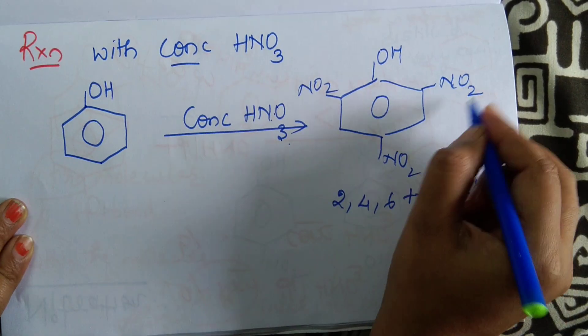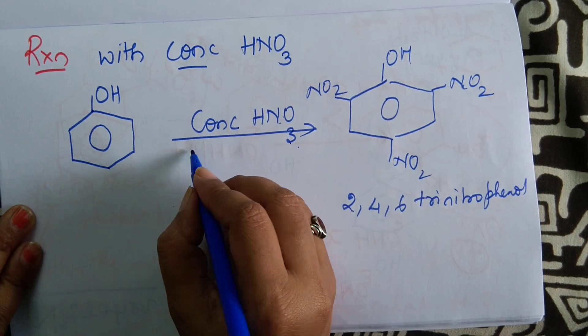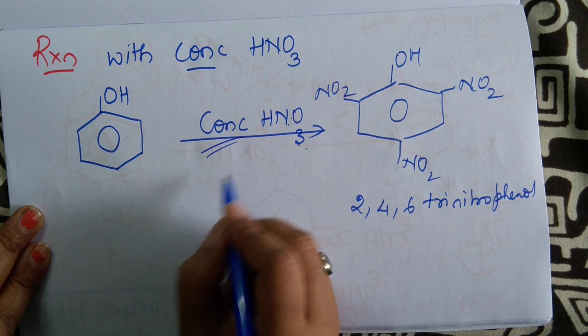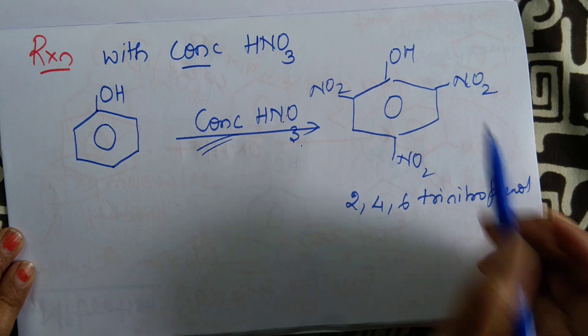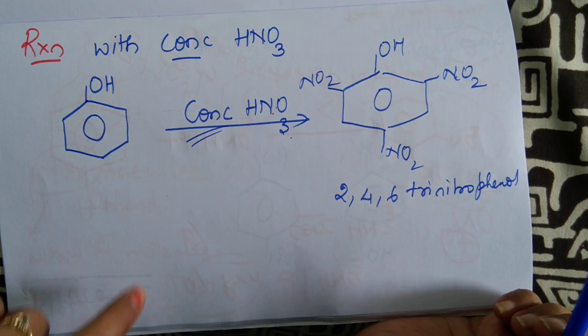Now why are we getting more nitronium ions? Because we are using concentrated nitric acid, the amount of nitronium ions in the medium will be in excess. Therefore, they attack all three positions.